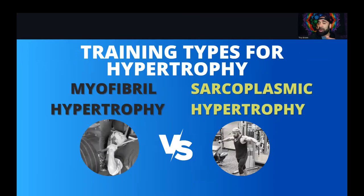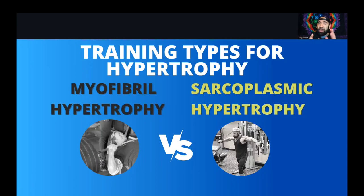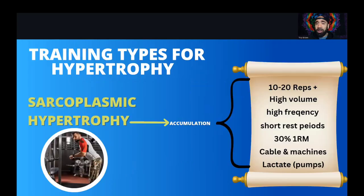Dr. Brad Schoenfeld actually identifies three types — the third being connective tissue, which makes up roughly 20 to 30 percent of the body. Connective tissue is dynamic; it doesn't just sit there — it can grow. But the two most important types are myofibrillar and sarcoplasmic hypertrophy. In a nutshell, myofibrillar training uses heavier loads, while sarcoplasmic is pump training.